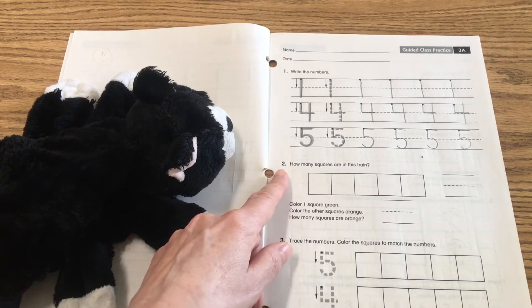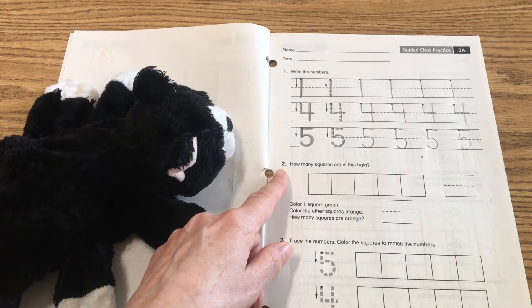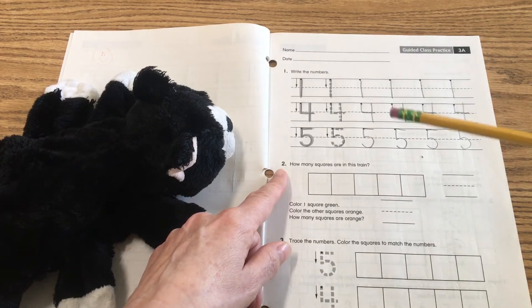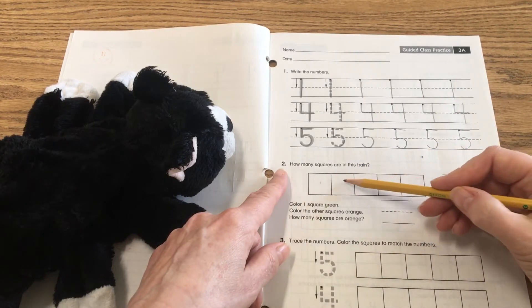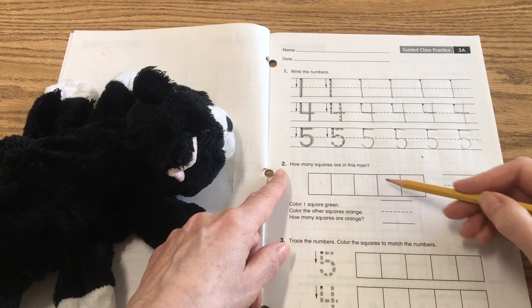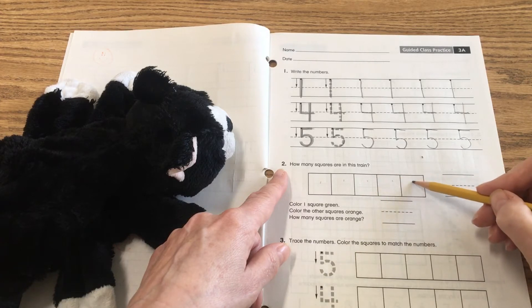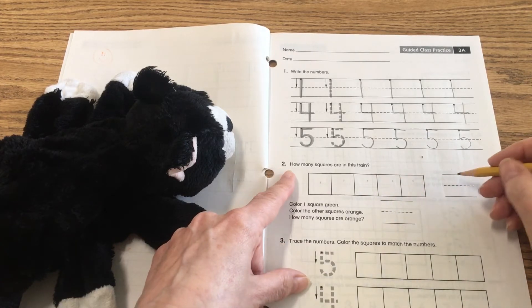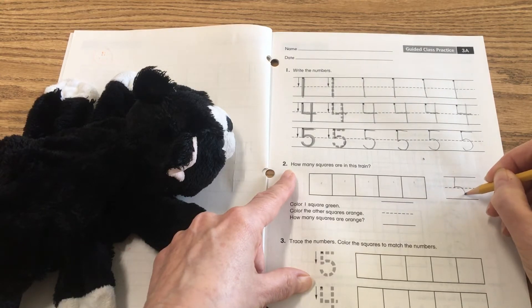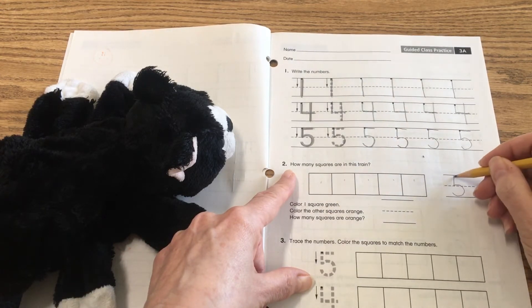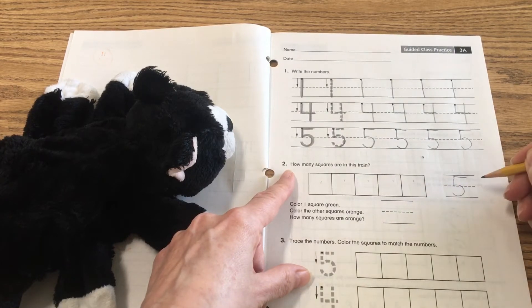Point to the number two. It says, how many squares are in this train? So we're going to count. I'm going to touch each one as I count. One, two, three, four, five. So there are five squares in that train. I have to write this right here. So that's a number five. Neck, belly, lift, and give it a hat. There's my number five.